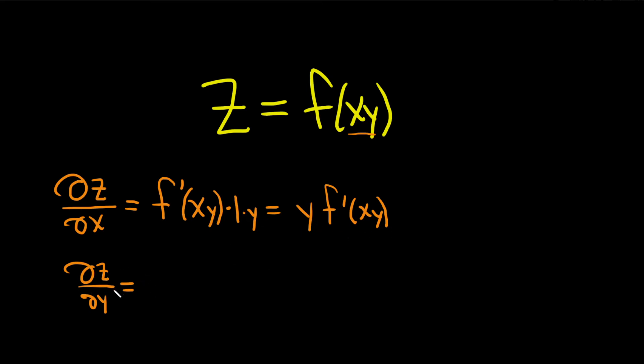Let's do it here now with y. Same thing, except now all of the x's are constants. So again, we use the chain rule, which says you take the derivative of the outside and you leave it evaluated at the inside and then you multiply by the derivative of the inside.